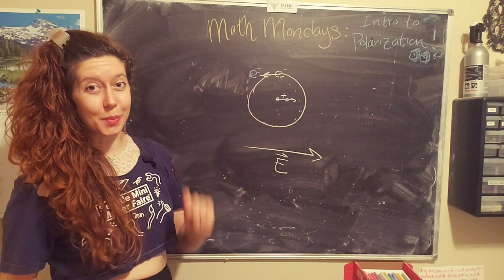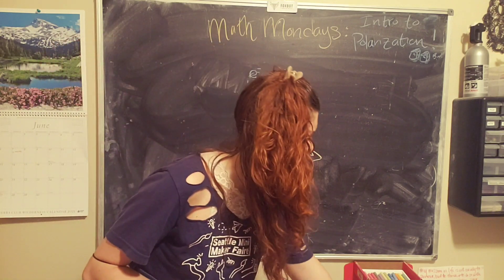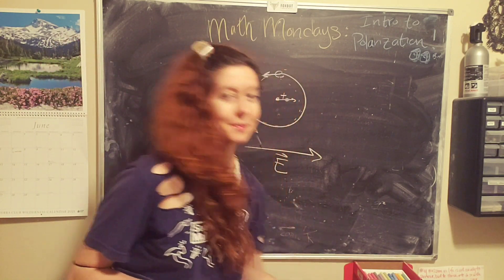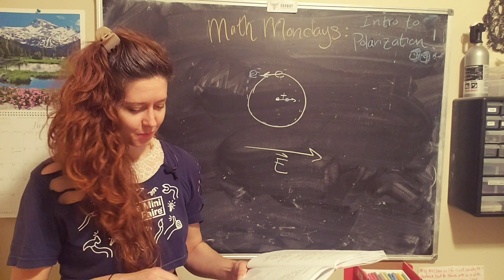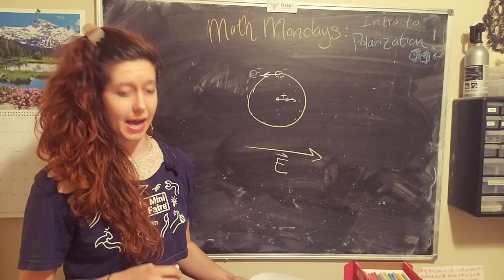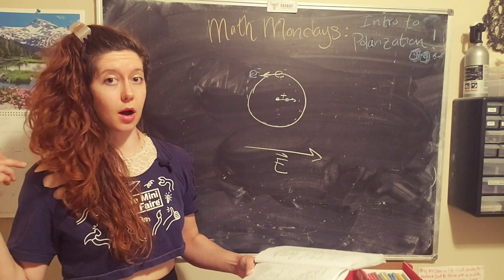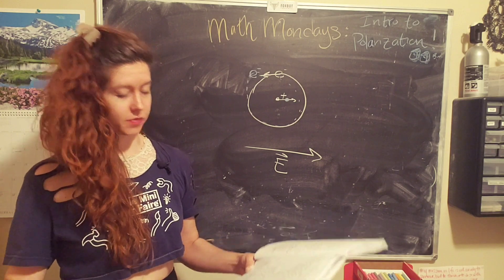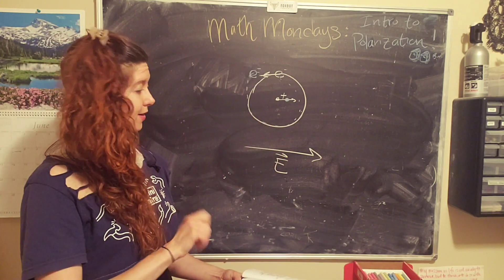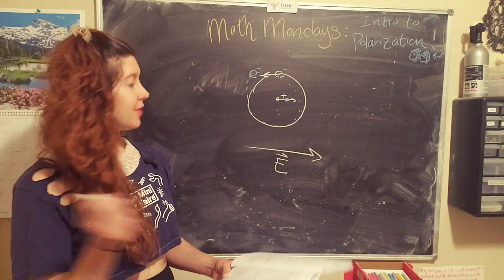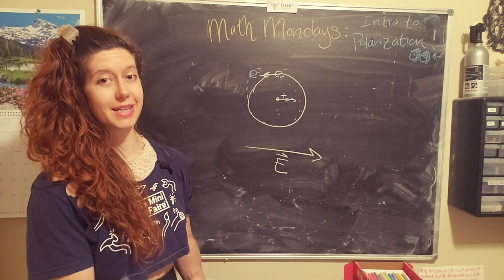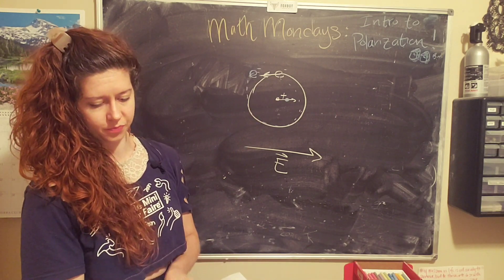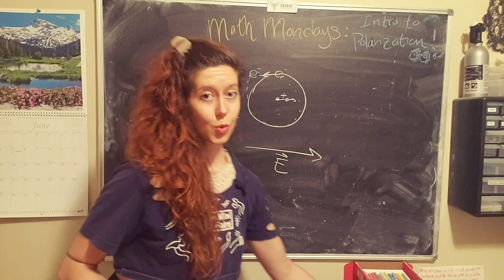And this is called polarization, which basically, let me make sure I get the definition exactly right, where the polarized atom has its positive charge shifted in one direction, aligned with the electric field, and the negative charge shifted in the opposite direction. So cool.